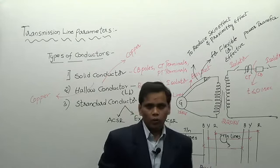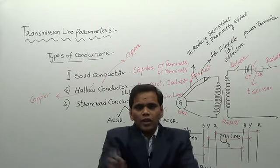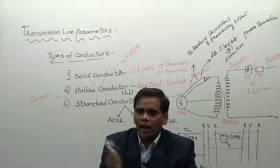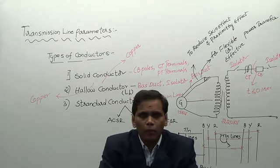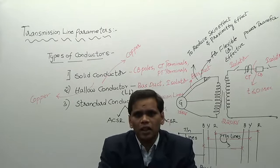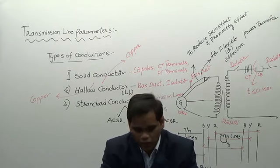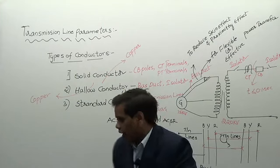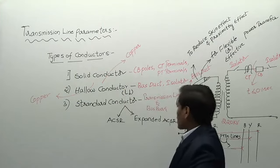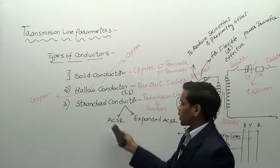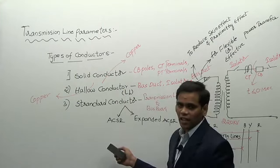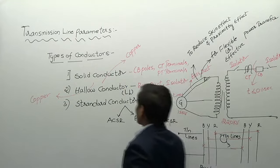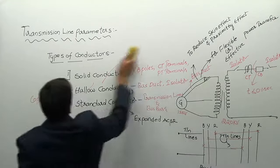We use stranded conductor for making transmission lines and bus bars. The stranded conductor is of two types: ACSR conductor and expanded ACSR. Now we will see about these.